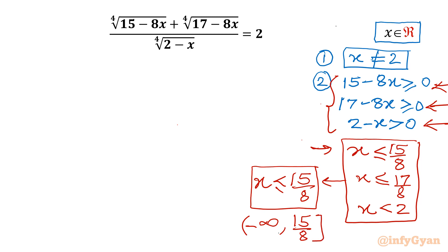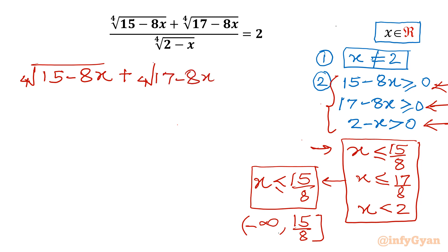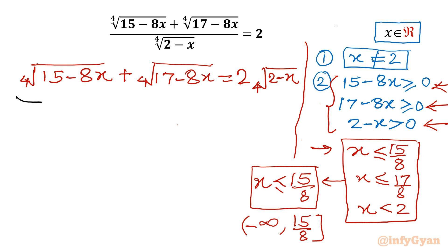Now I will cross-multiply the denominator to the right-hand side. So: 4th root of (15 minus 8x) plus 4th root of (17 minus 8x) equals 2 times 4th root of (2 minus x). Now I will use substitution. I will consider the first radical term as 'a', and the second whole term as 'b'.